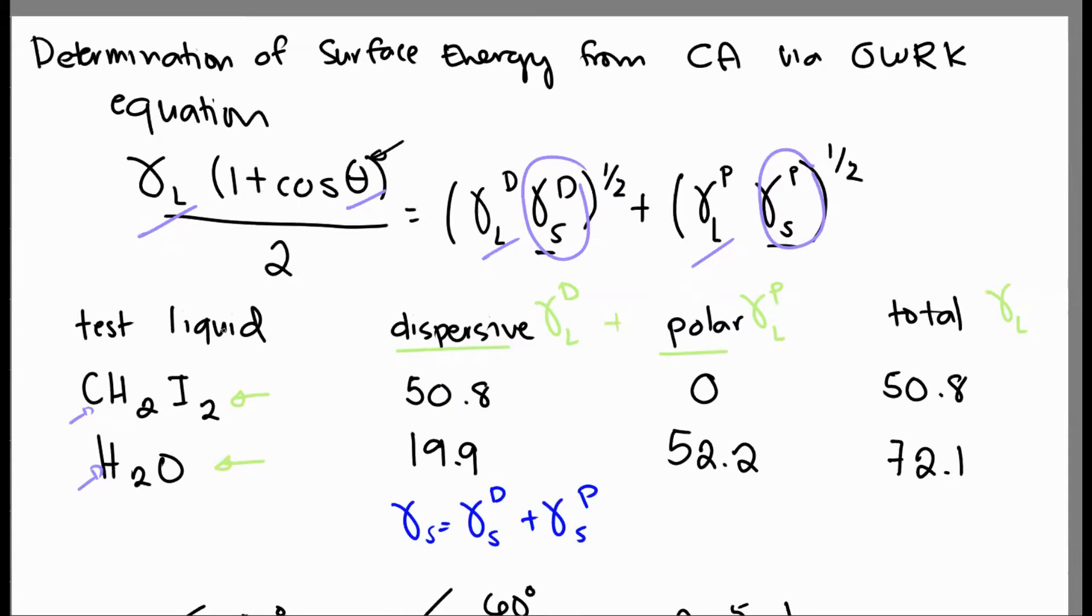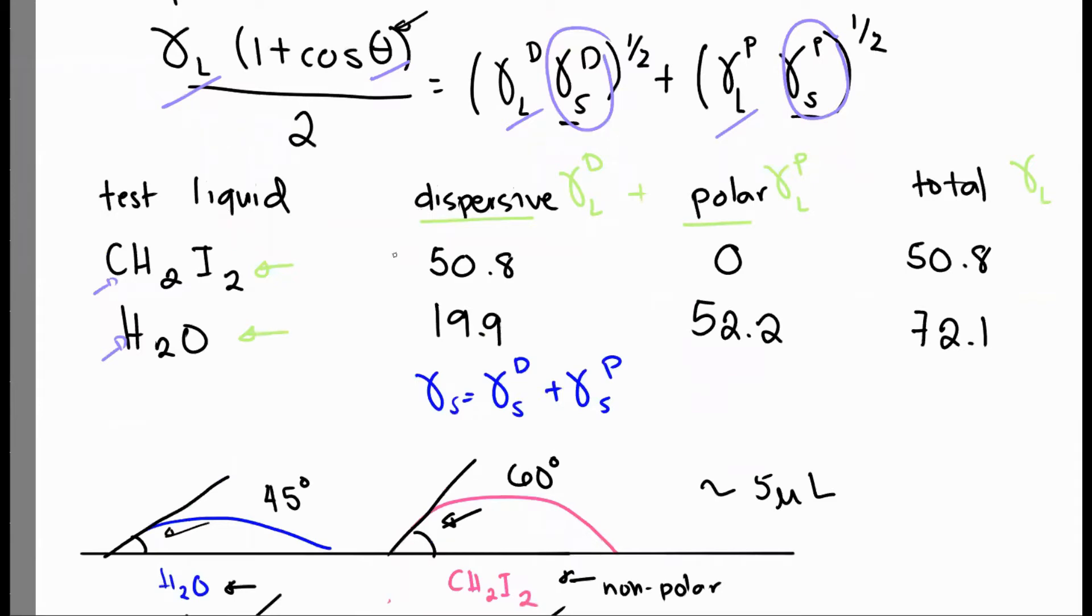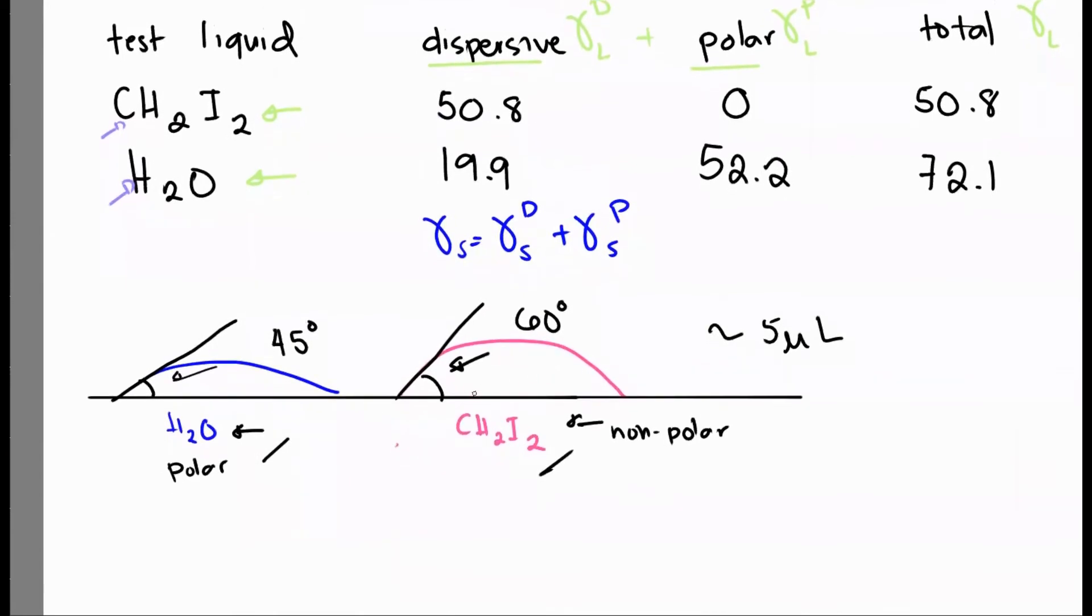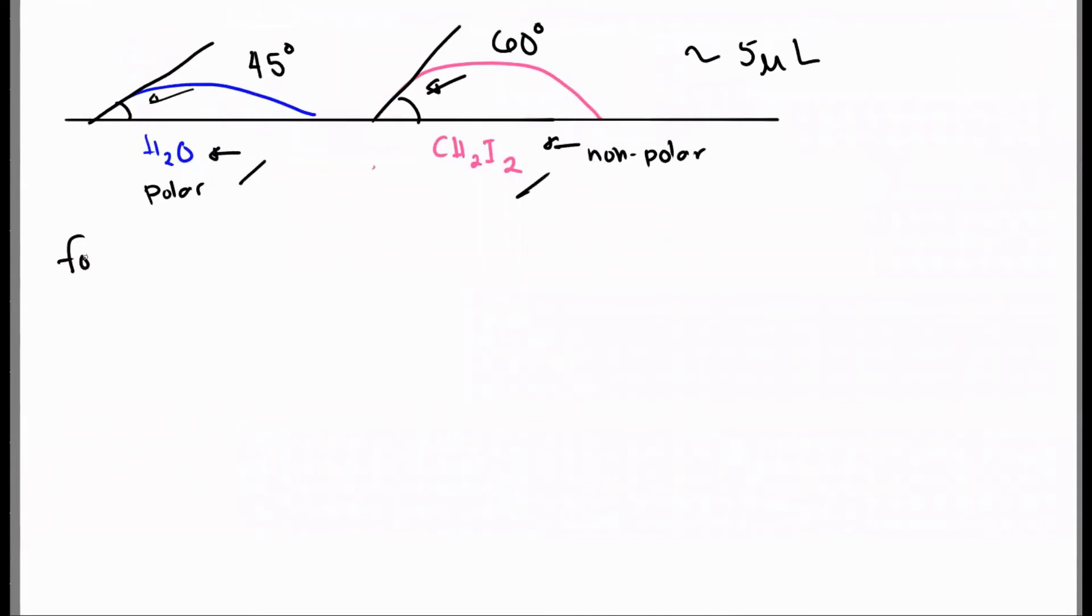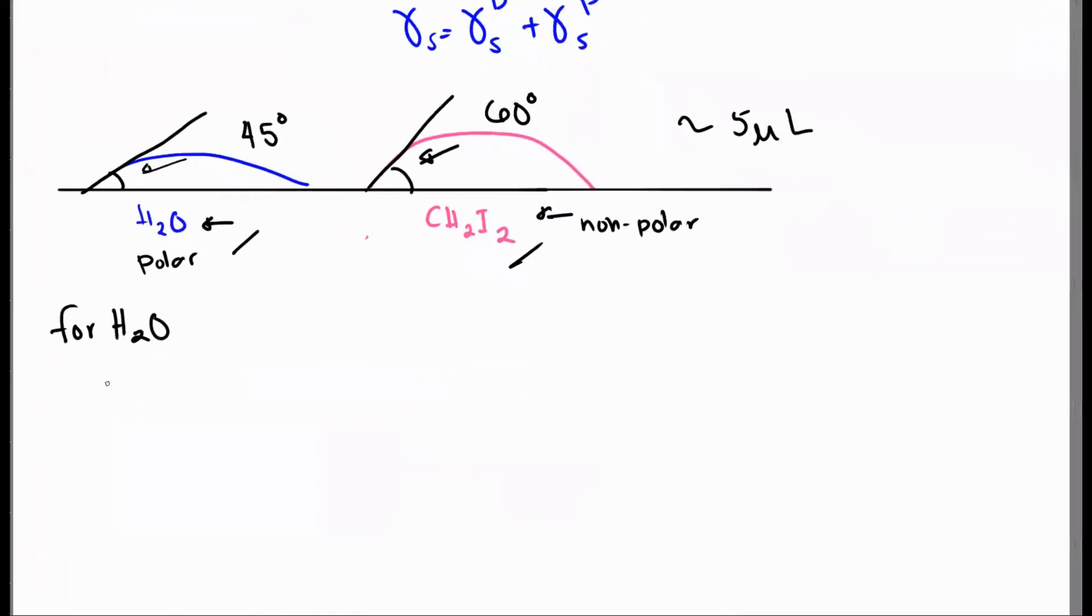From our equation, we measured this in the experiment. This is given from your tabulated tables. What we don't have is gamma-Sd and gamma-Sp. This is what we're looking for. We have two unknowns, which is why usually we use 2 test liquids. So how do we apply this equation now to our results? Basically, we'll have a system of 2 equations since we have 2 unknowns here. First, for our water, for H2O droplet.